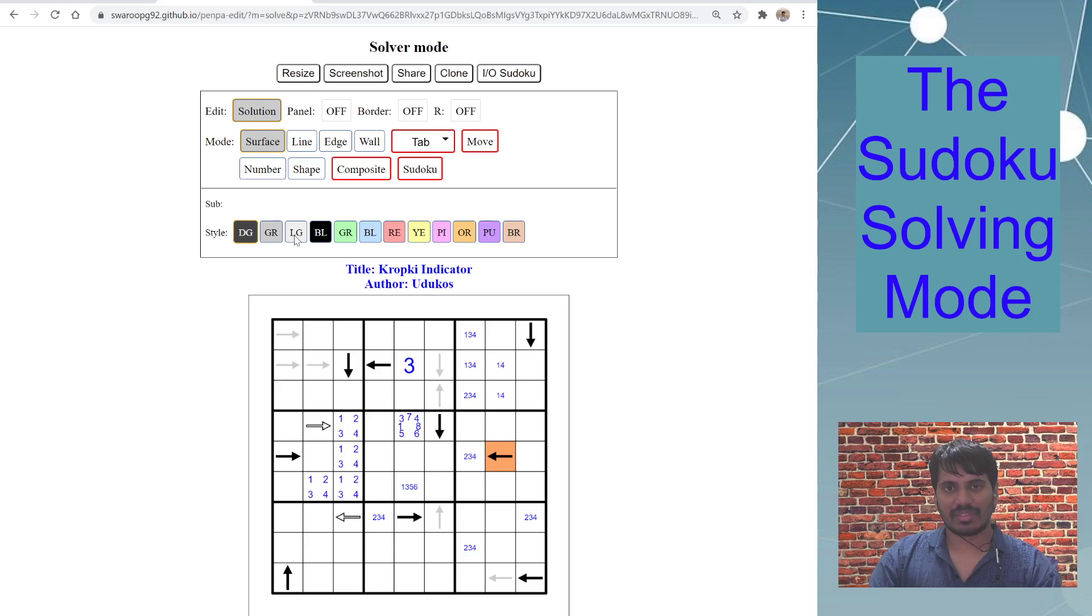You can see this highlighted color will switch to surface mode, and the surface mode is nothing but shading. You can quickly switch between these modes and enter numbers.